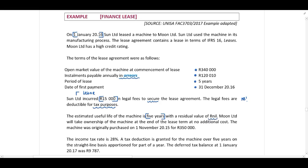Moon Ltd will take ownership of the machine at the end of the lease term at no additional cost. Therefore, we know that for the right-of-use asset of Moon Ltd, Moon Ltd will depreciate this asset over 5 years. The machine was originally purchased on 1 November 2015 for $350,000 and leased out on 1 January 2016, at which date it has a market value of $340,000.